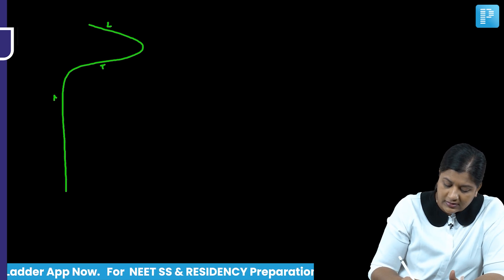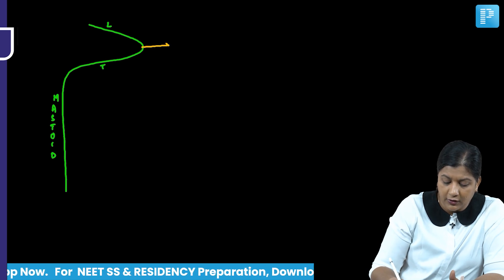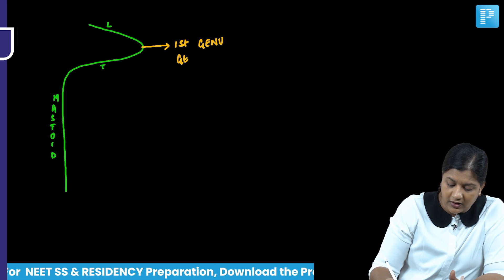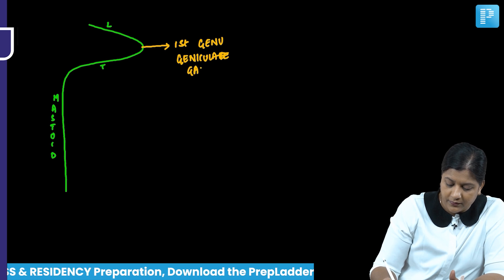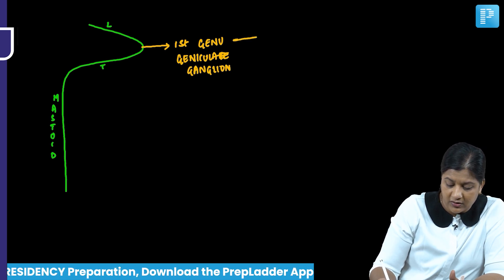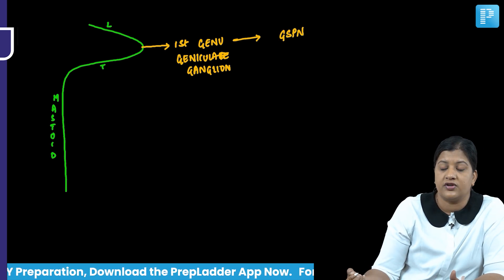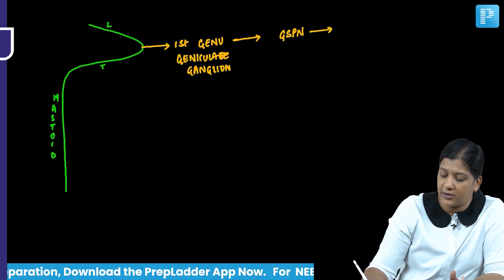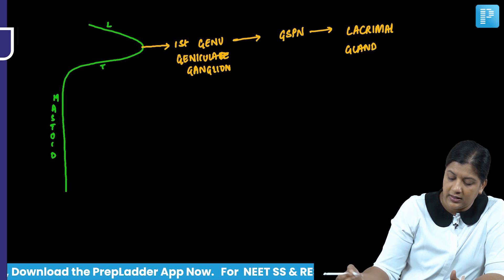The facial nerve has a labyrinthine segment, a tympanic segment, and a mastoid segment. The junction from labyrinthine to tympanic segment is the first genu, also called the geniculate ganglion. The geniculate ganglion gives rise to the greater superficial petrosal nerve (GSPN), which is responsible for supplying the lacrimal gland.